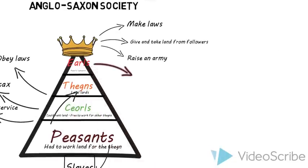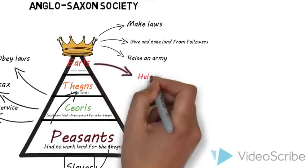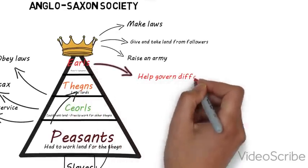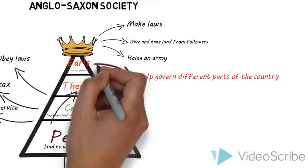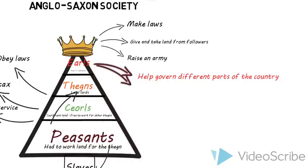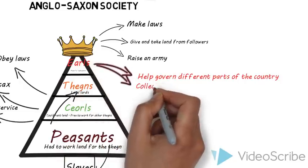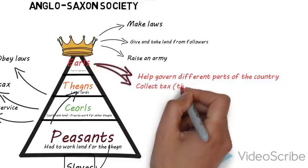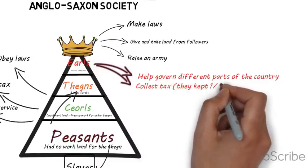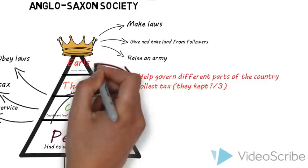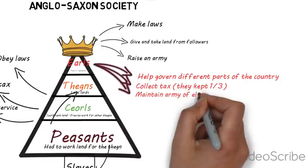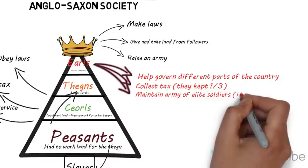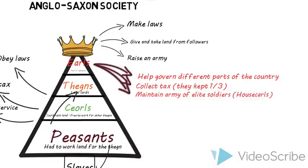The earls had various responsibilities that came with the large tracts of land the king gave them. They were expected to help govern the different parts of land they were given and make sure the king's laws were being put into place. They were also expected to collect taxes on behalf of the king, and in return they could keep a third of any taxes they collected, making them incredibly rich — sometimes richer than the king. They were also expected to maintain an elite group of soldiers called the house carls that the king could call in emergencies.